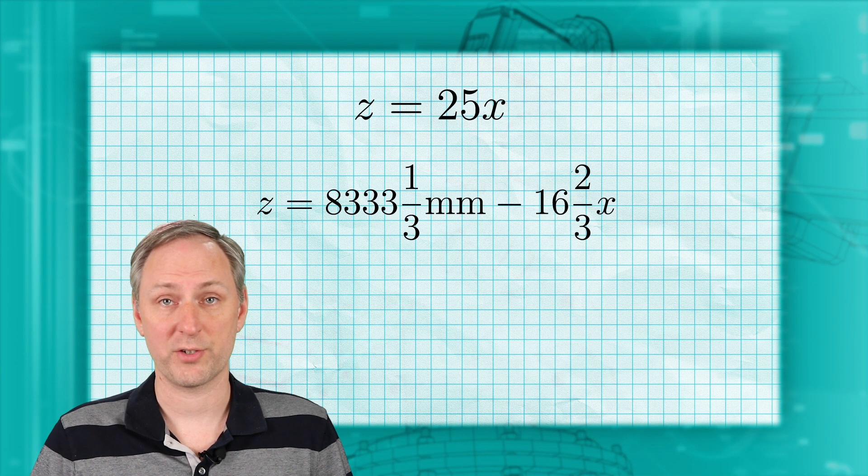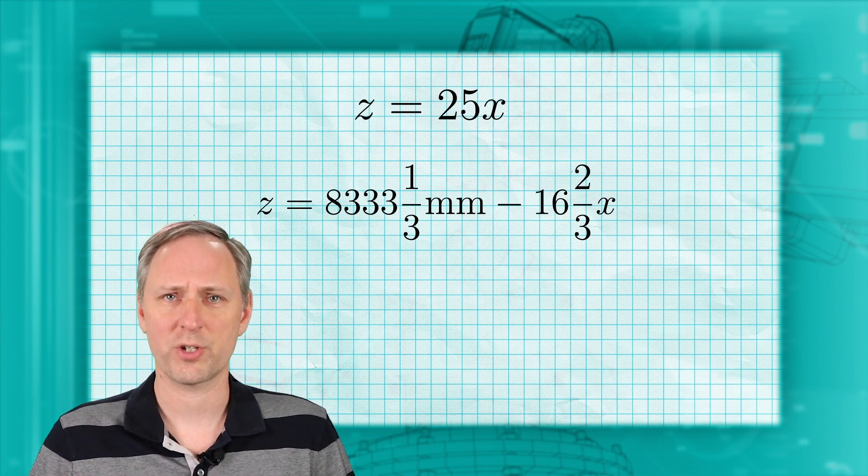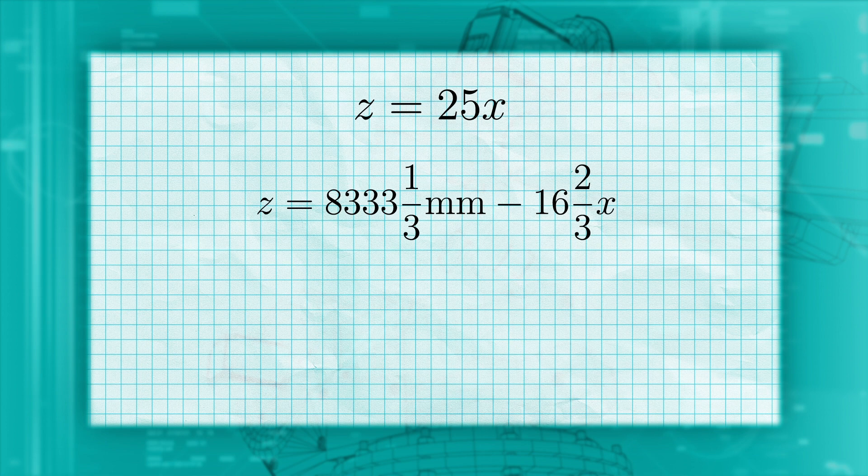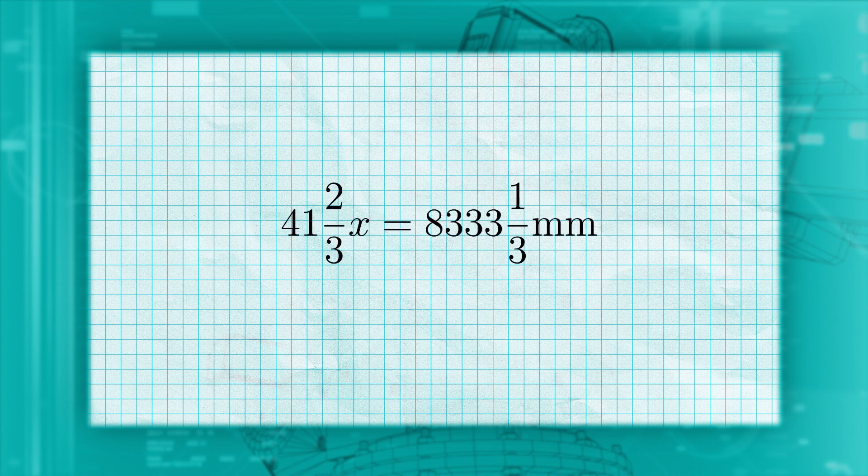Now we have two equations with two unknowns, X and Z, the actual position of our point P in the real world. We can solve this system of equations by substitution, since they have Z terms with a coefficient of 1. We can then rearrange the equation to solve for X, and we get a value of 200 millimeters for X.